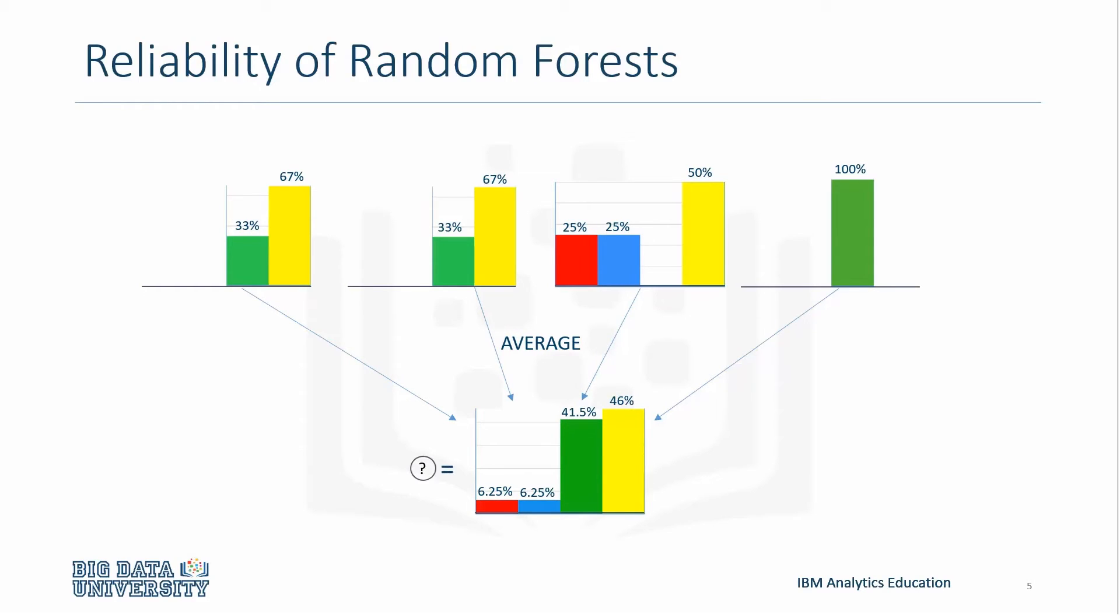So this is what the unknown data point can equal. We see that the average presents a highest chance of being yellow, with green being a close second. Clearly, there's also a very low chance of the point being red or blue.